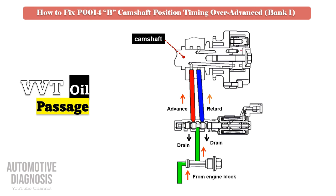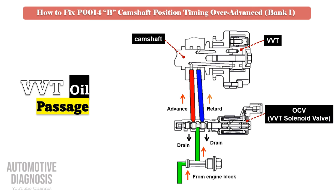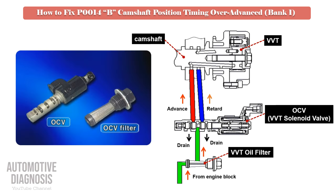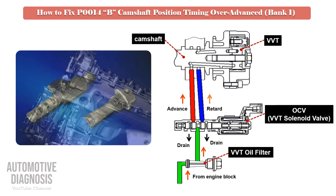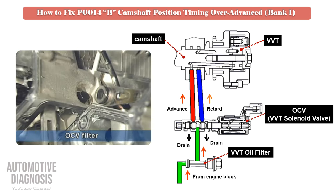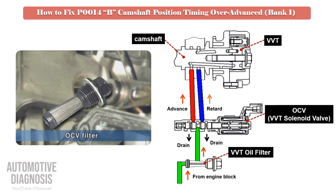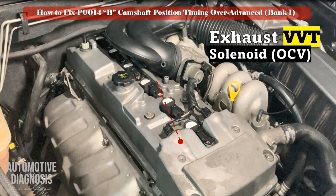You can see the passages into the VVT from the engine block into the VVT oil filter, then OCV. Many engines with a VVT mechanism have a filter right before OCV, so locate that filter, remove it, and clean it thoroughly. As this fault code is set for the bank 1 exhaust side, locate the relevant OCV to perform the test procedure.